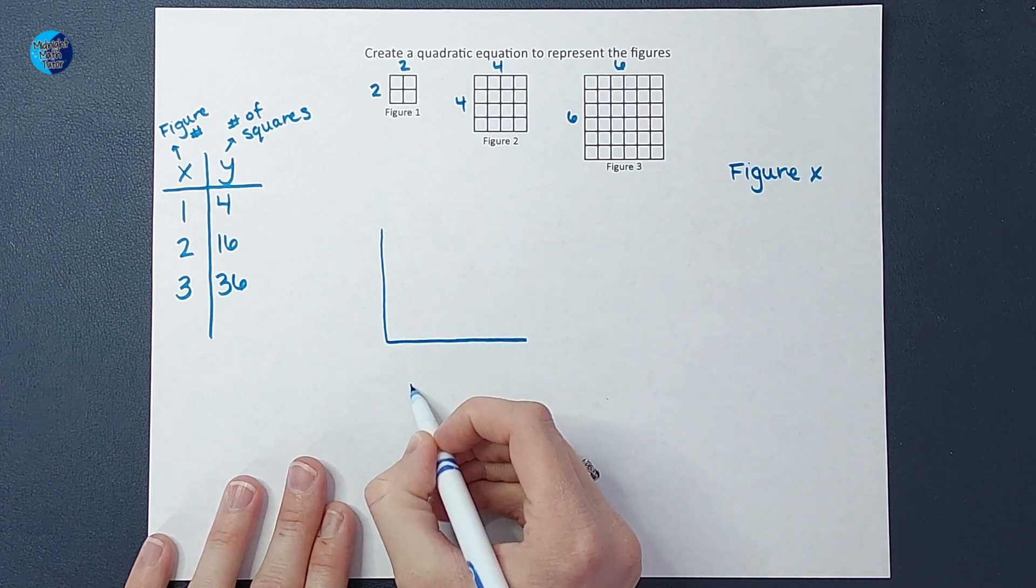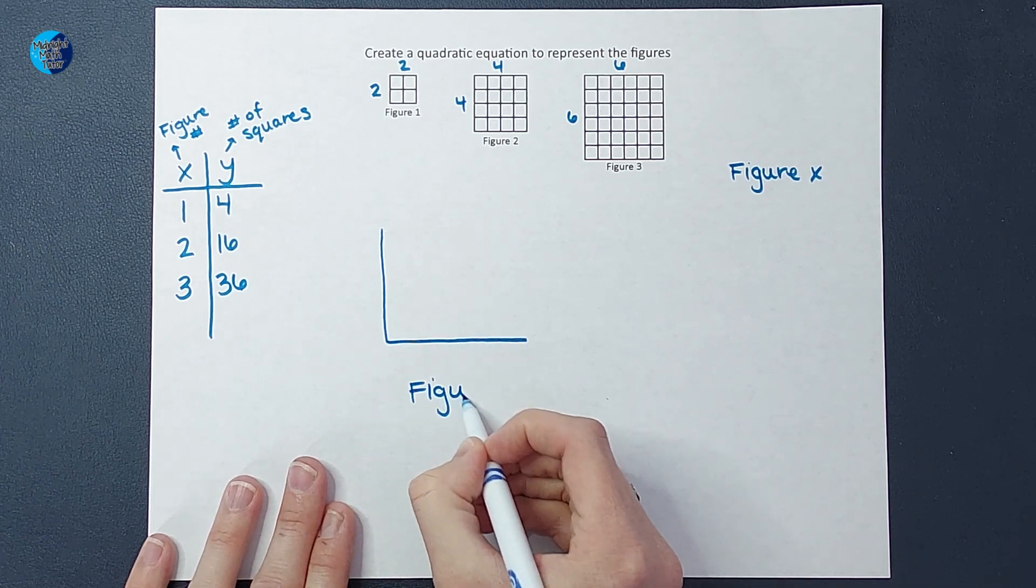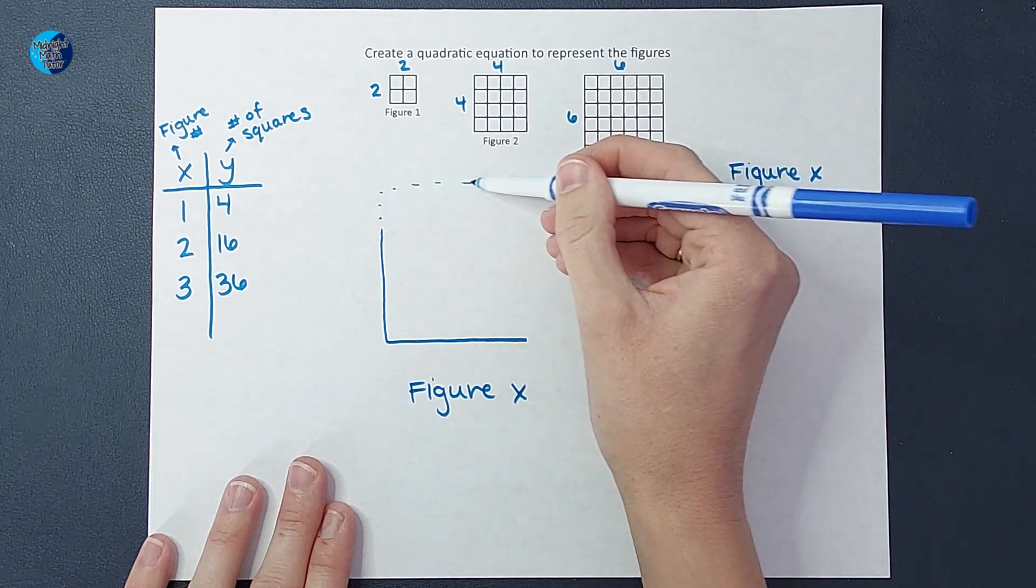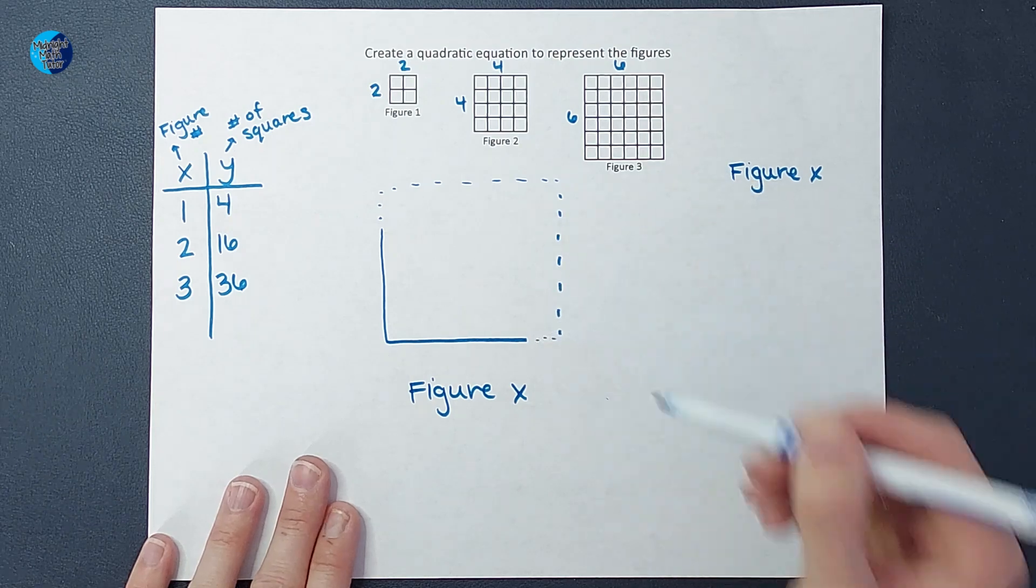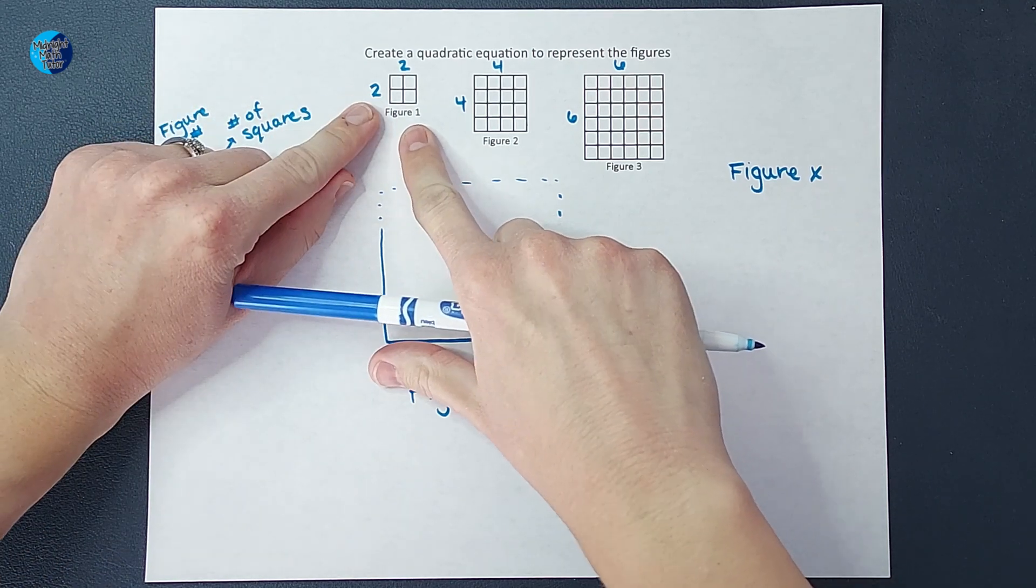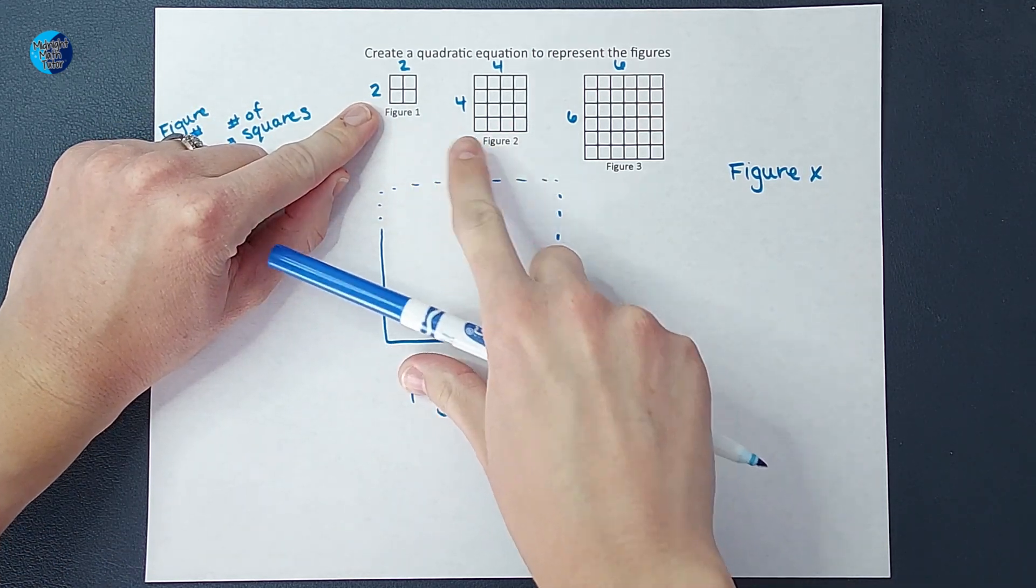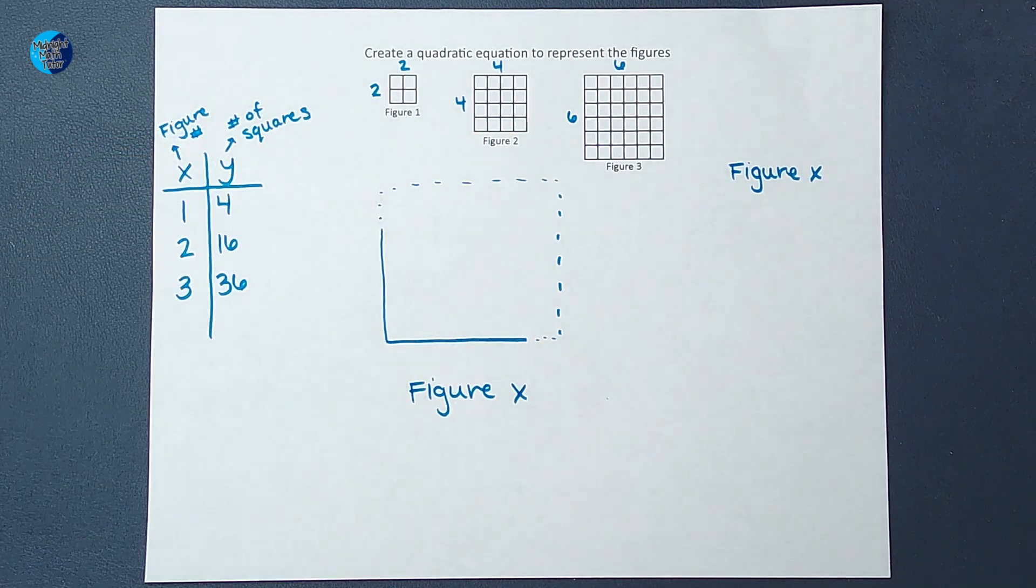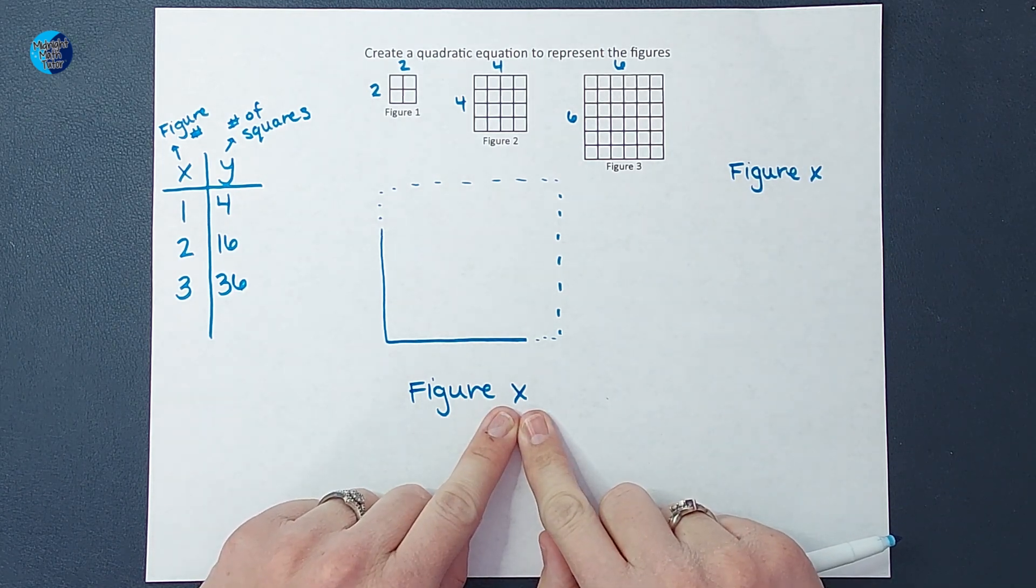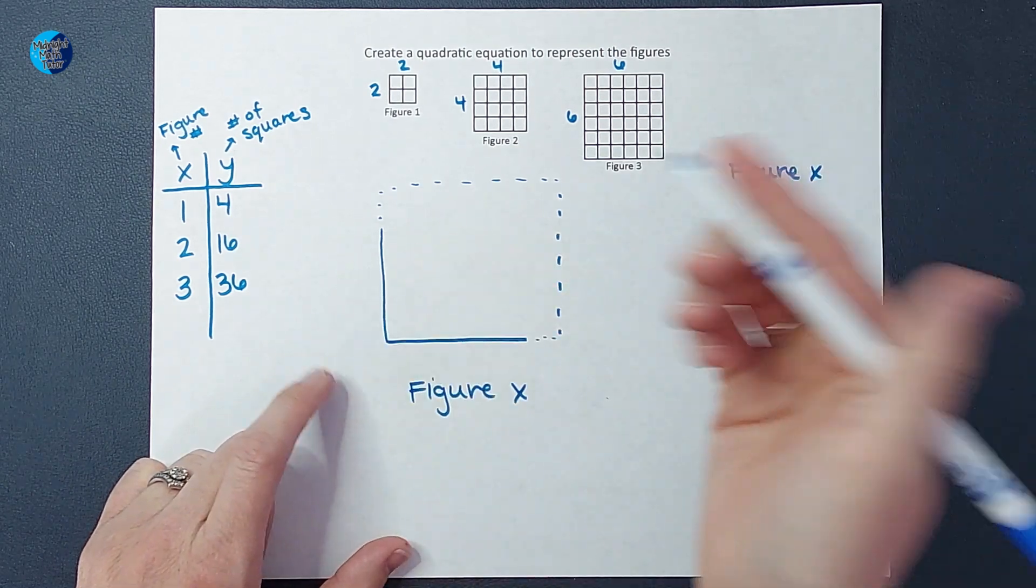For figure x, we don't know exactly how big it would be. We can put some dotted lines, it's gonna be something like that. When it's figure one, this side is 2. Figure two, it's 4. Three, it's 6. So it's double. So I can assume that figure x, this side is going to be double it, or 2x.